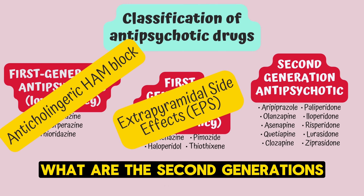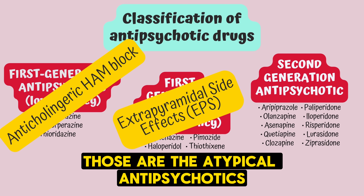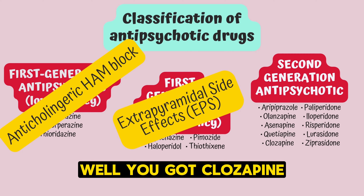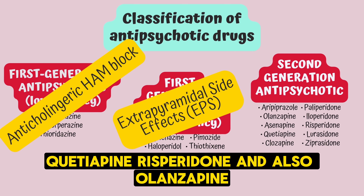What are the second-generation antipsychotics? Those are the atypical antipsychotics. Examples include clozapine, quetiapine, risperidone, and olanzapine.